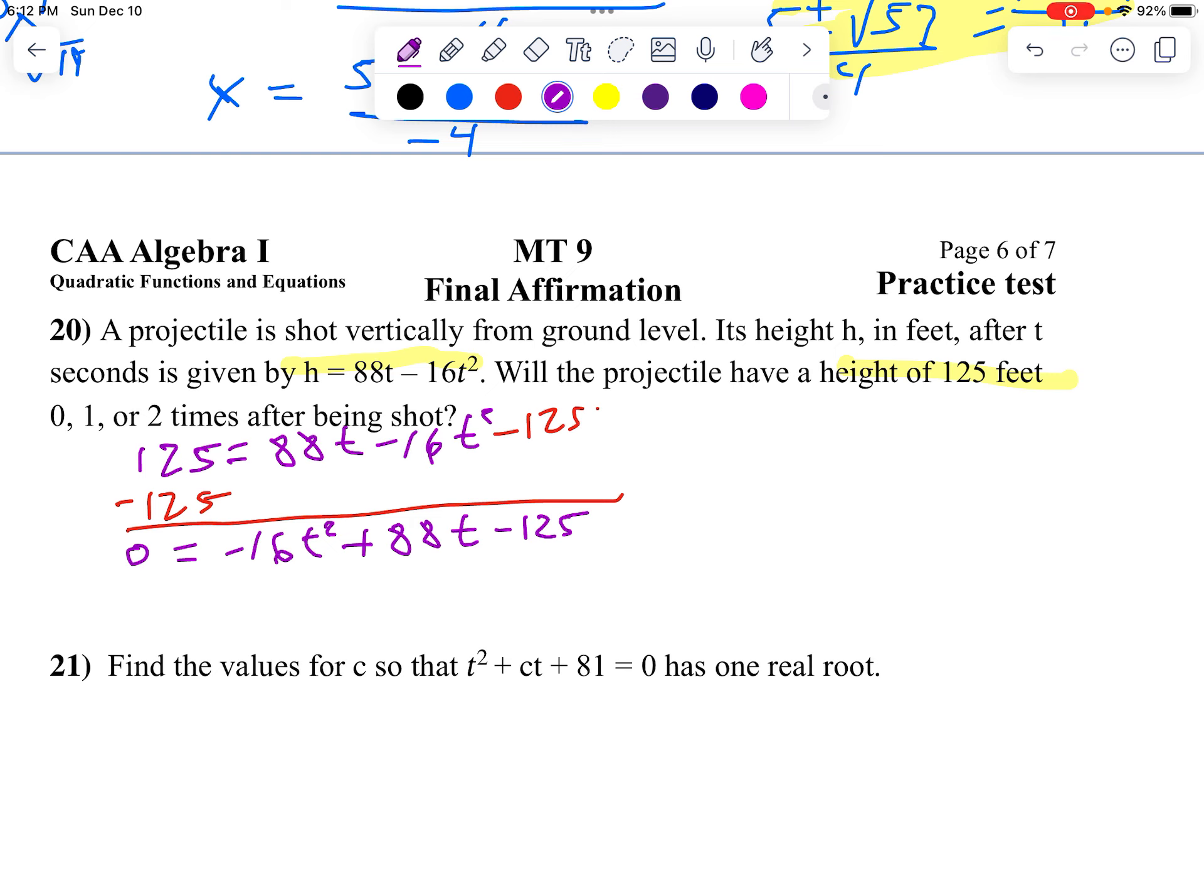So all I'm going to do here is say, well, a is going to be negative 16, b is going to be 88, and c is going to be negative 125.